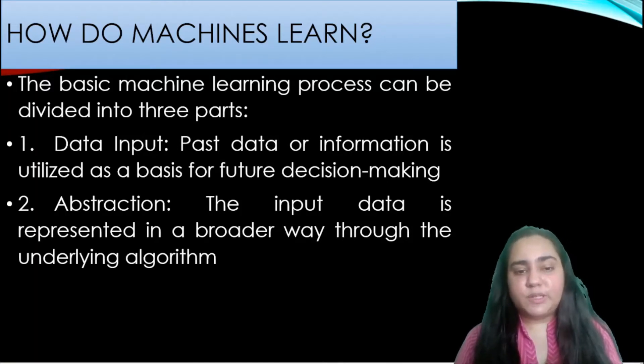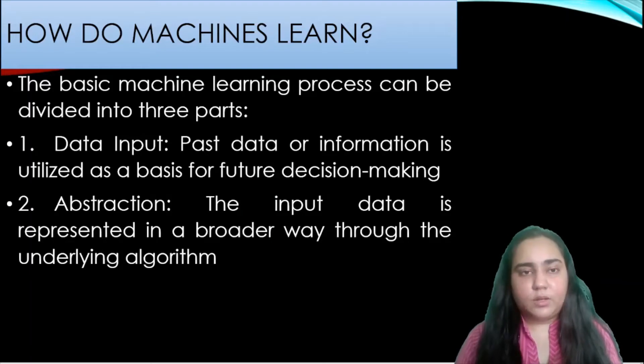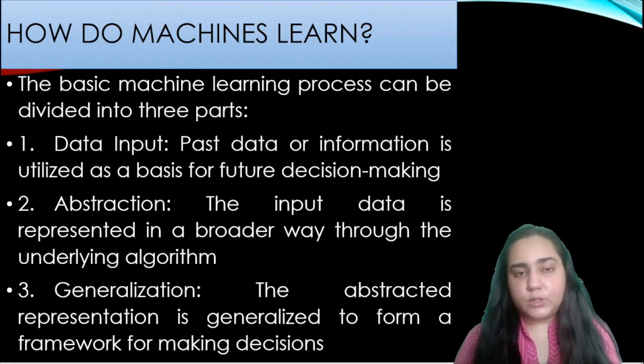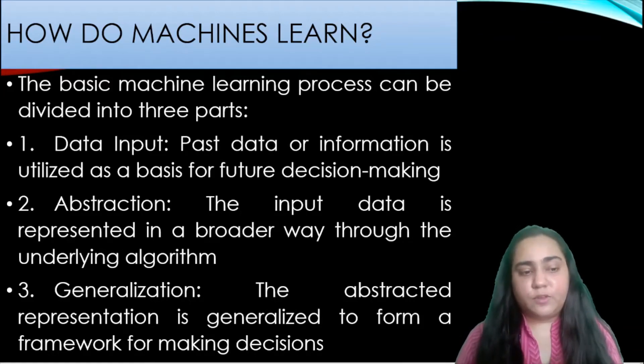Second is abstraction. The input data is represented in a broader way through the underlying algorithm and you'll soon see that there are many machine learning algorithms that you can apply. And the third is generalization. The abstracted representation is generalized to form a framework for making decisions. You have to generalize the representation because you are going to use that data which you had previously to predict what the future holds.